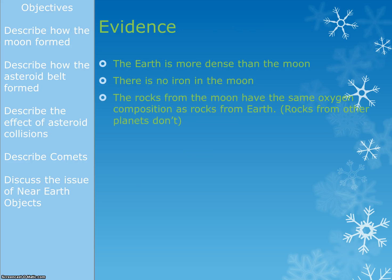For the higher paper, you need to be able to cite some evidence for this. The evidence is that the Earth is more dense than the Moon, because it's the low-density rock that became the Moon. There's no iron in the Moon, and that's because the two iron cores merged when the two planets collided. So the bits that spun off to be the Moon had no iron in them, which is what we see.